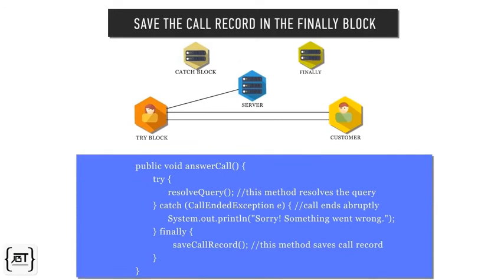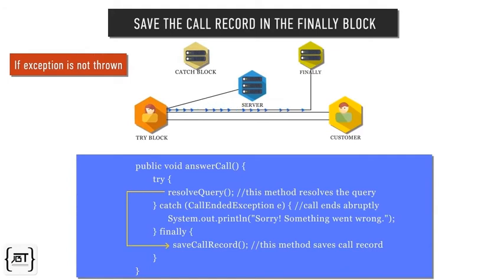We will save the call record in the finally block. If exception is not thrown, control goes to finally after try block is complete. If exception occurs, first the catch block runs and then control goes to finally.